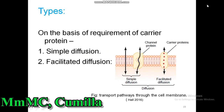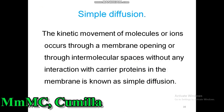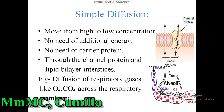Diffusion is again divided into simple diffusion and facilitated diffusion. In case of simple diffusion, there is no need of carrier protein, but in case of facilitated diffusion, it occurs with the help of carrier protein. Simple diffusion is the kinetic movement of molecules or ions through a membrane opening or through intermolecular space without any interaction with the carrier protein. The criteria of simple diffusion are: movement from high to low concentration, no need of additional energy, and no need of carrier protein. Simple diffusion occurs through the channel protein and lipid bilayer interstices. An example is the diffusion of respiratory gases like oxygen and carbon dioxide across the respiratory membrane.